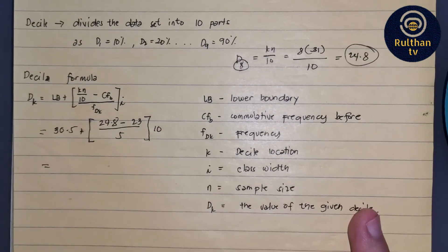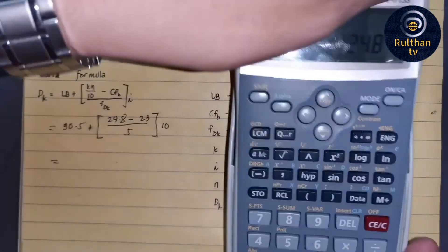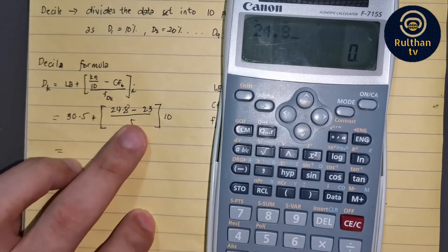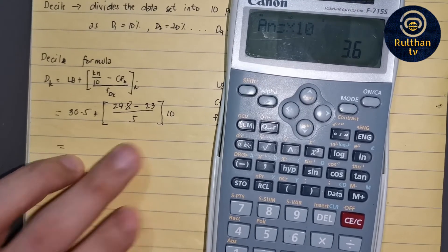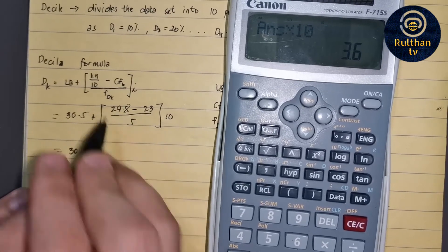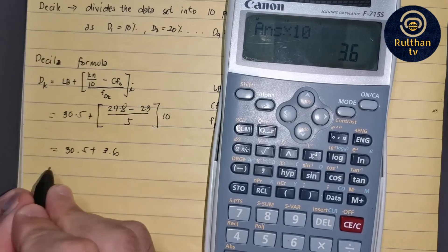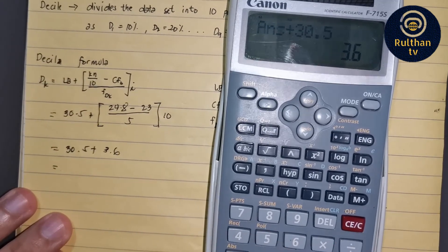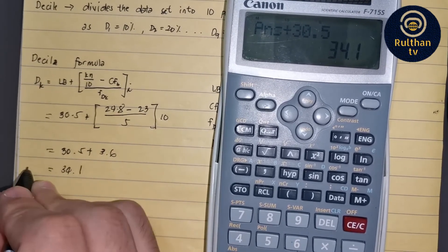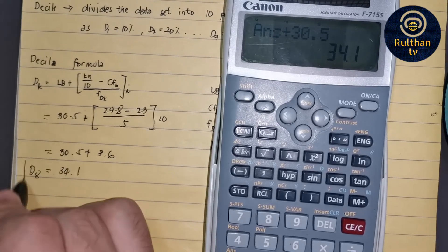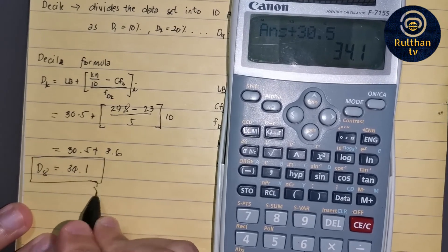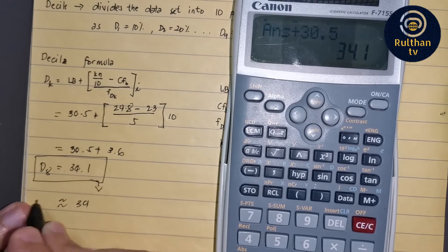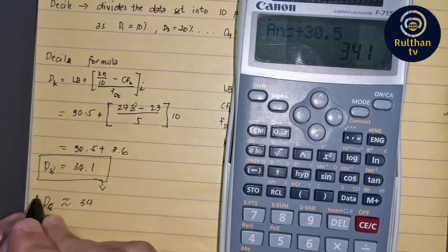Now we calculate. Using our calculator: 24.8 minus 23, divided by 5, times 10 gives us 3.6. So we have 30.5 plus 3.6, which equals 34.1. That is D sub 8. Step 3 is already done — we found that decile 8 is equivalent to 34.1.